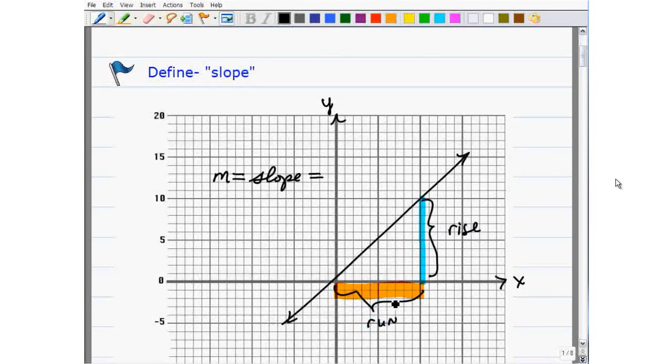So what's happening here is this line is going out 10 and rising 10. So for every 10 it runs, it rises 10.